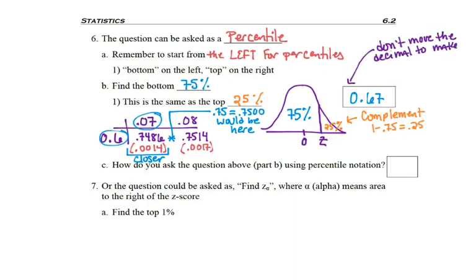Now be careful when you get 0.67, stop. Do not move the decimal and make that answer into a percentage. The answer is a z-score. It's not a probability question, so don't move the decimal. That same question, how would we have asked it in percentile notation?